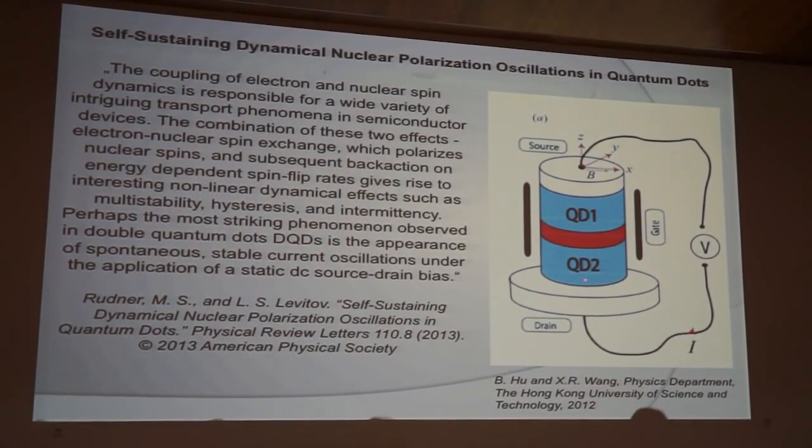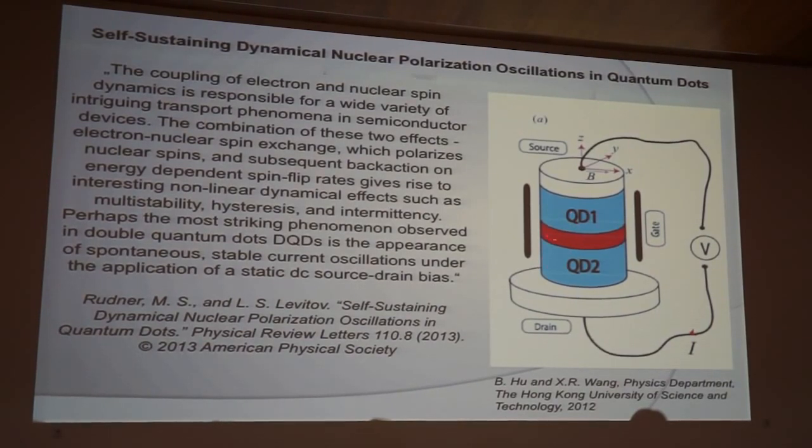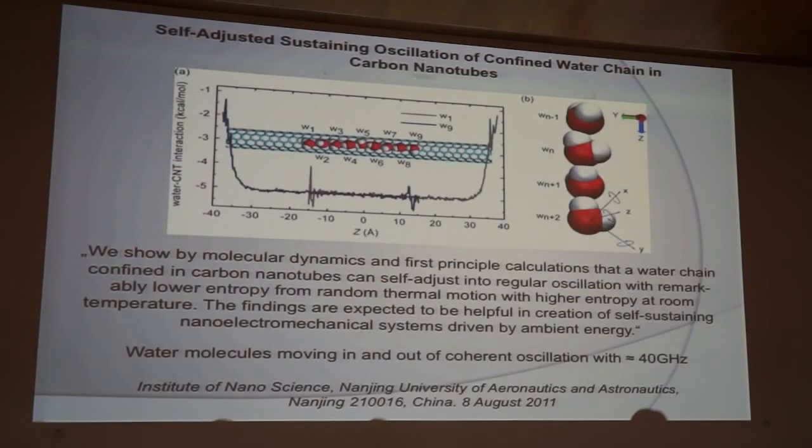Now, what you see on the right are two quantum dots in blue separated by a tunneling barrier in red, and if a static source drain bias is applied, you get these steady current oscillations.